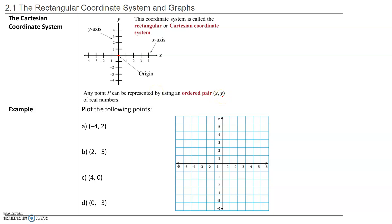For example, if we have the point (-4, 2), the x-coordinate is -4 and the y-coordinate is 2. So from the origin, since x is -4 and the x-axis is the horizontal axis, we go 4 units to the left and 2 units up. This represents the point (-4, 2).